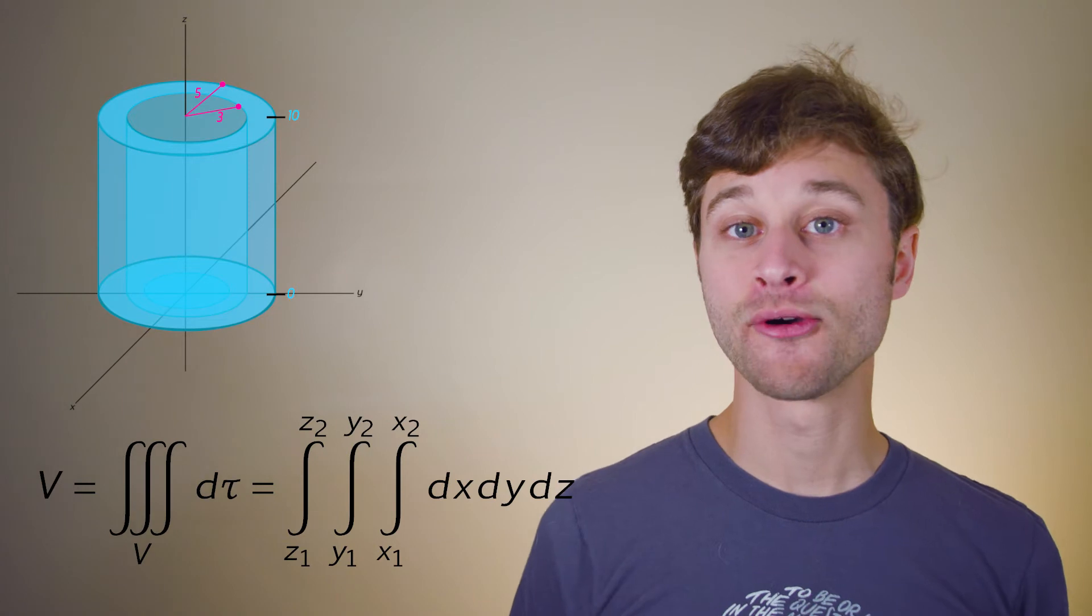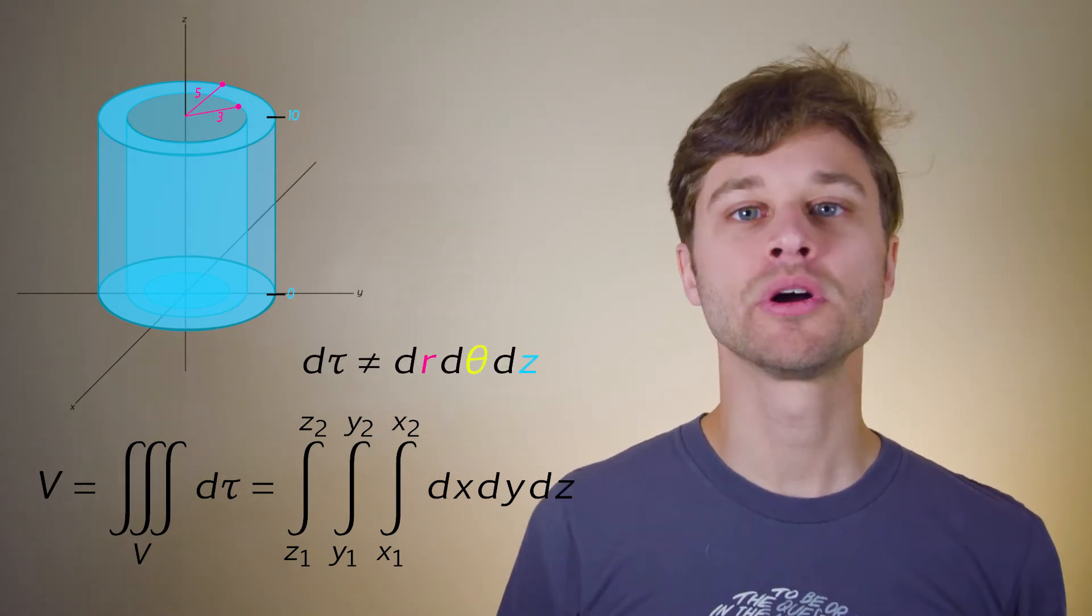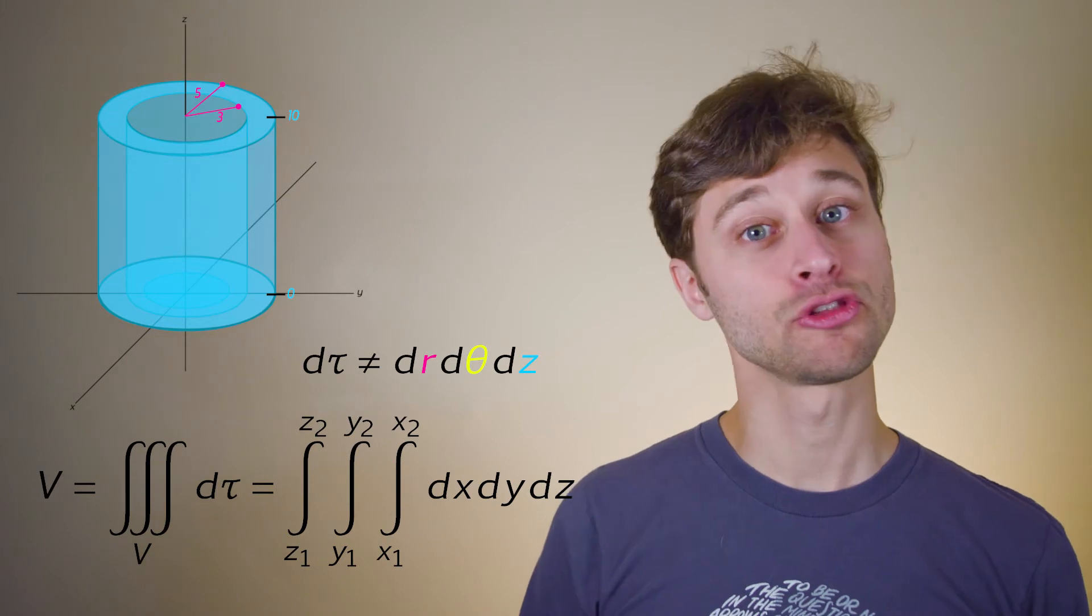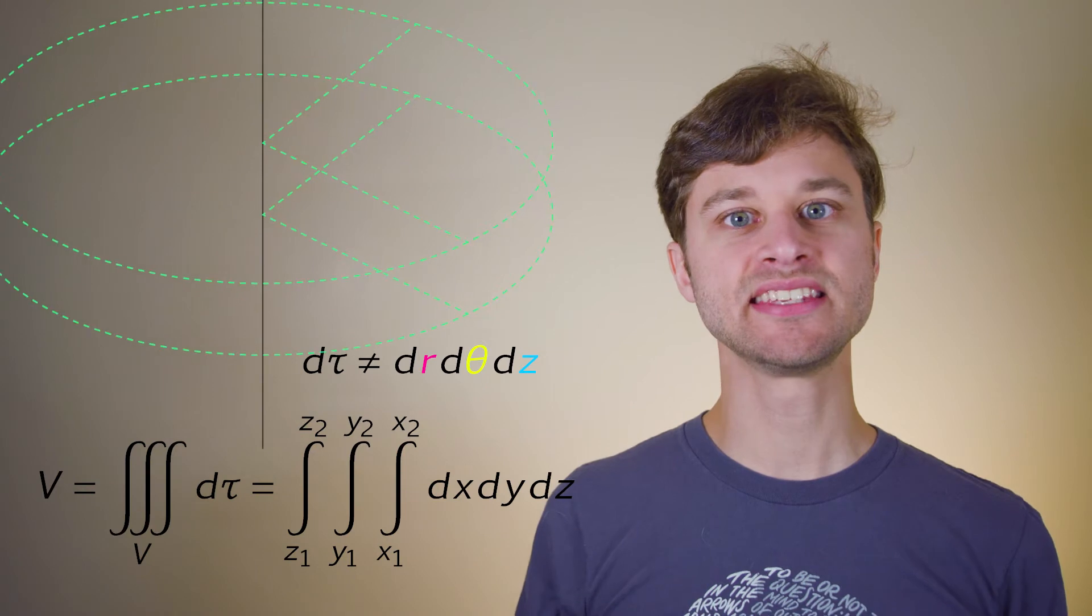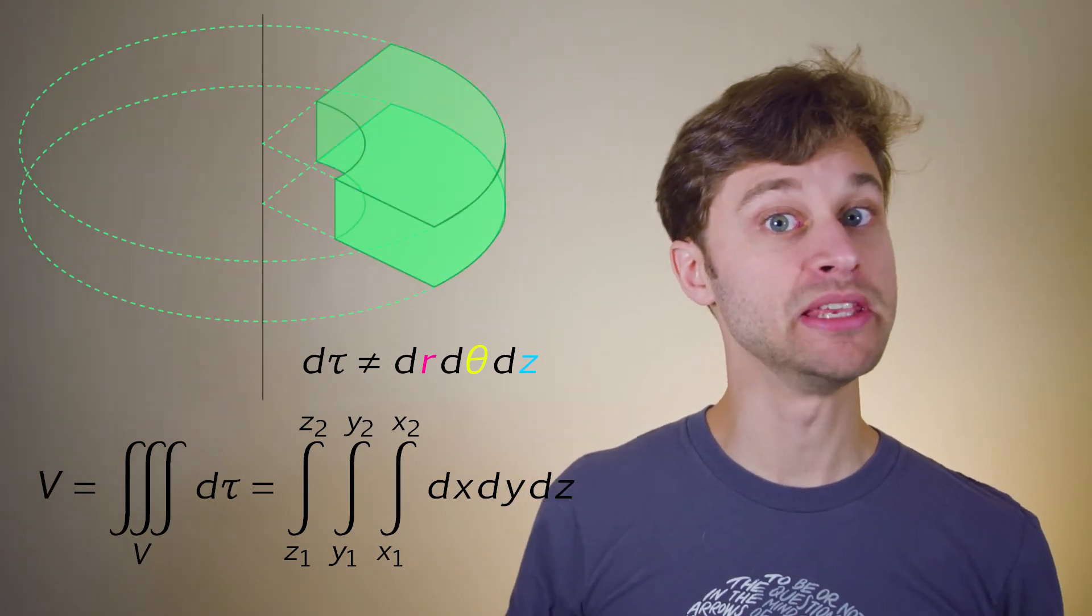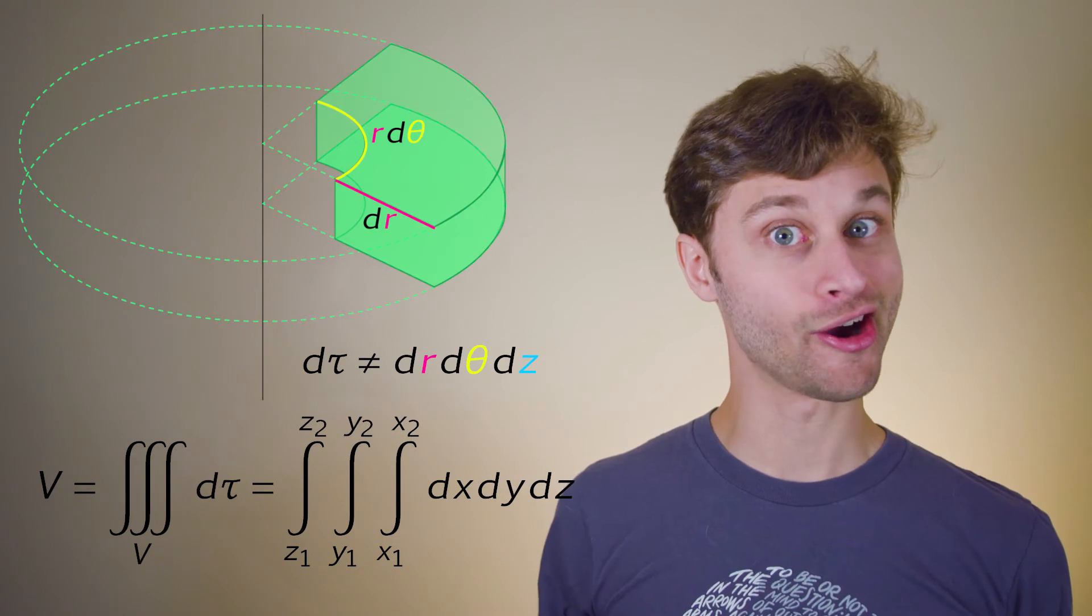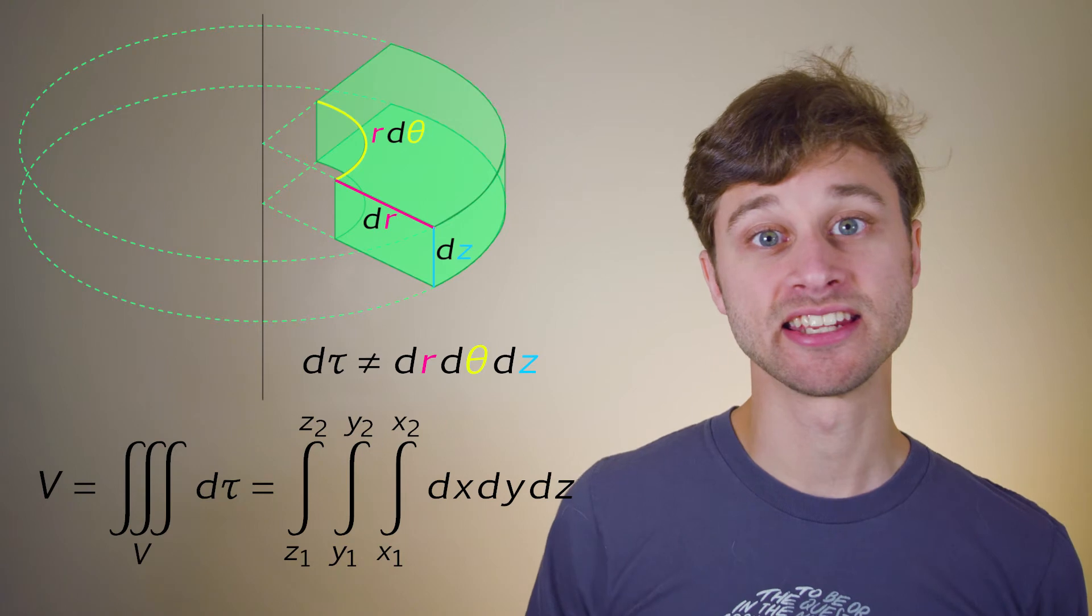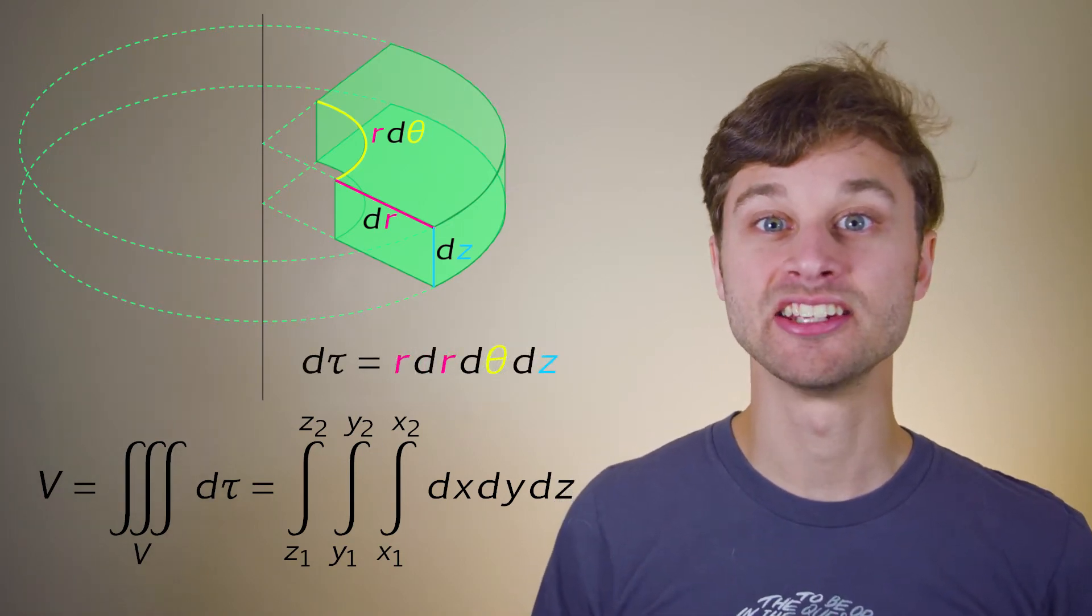Unfortunately though, our d tau in our triple integral does not become dr, d theta, or dz. If you want to see how the volume element d tau transforms into cylindrical coordinates, we can either use some cylindrical geometry, or something called the Jacobean. If we look at it geometrically, we can see that the volume element is composed of three linear elements. One being an arc length, r d theta, one being a radial length, dr, and one being a linear height, dz. Multiplying all these together, we get our volume element d tau is equal to r d theta dr dz.